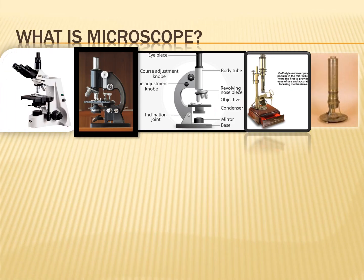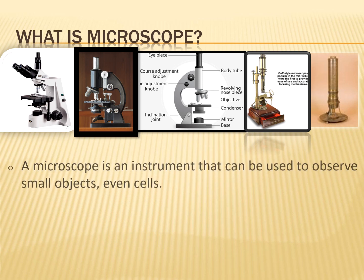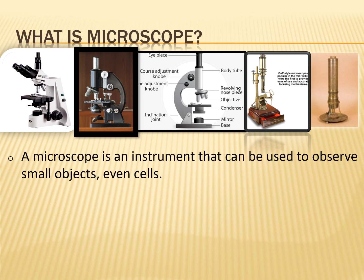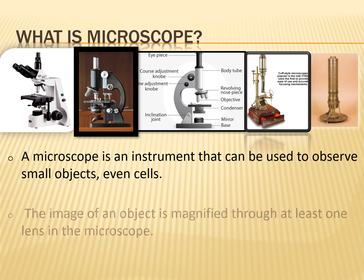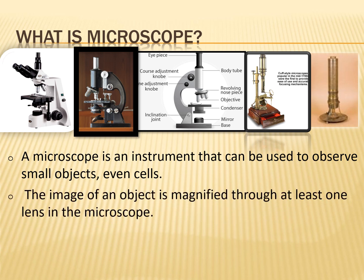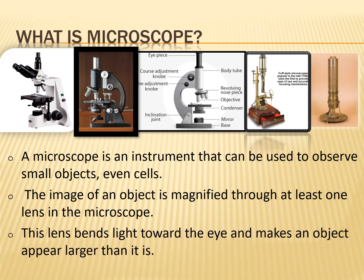What is a microscope? A microscope is an instrument that can be used to observe small objects, even cells. The image of an object is magnified through at least one lens in the microscope. This lens bends light toward the eye and makes an object appear larger than it actually is.